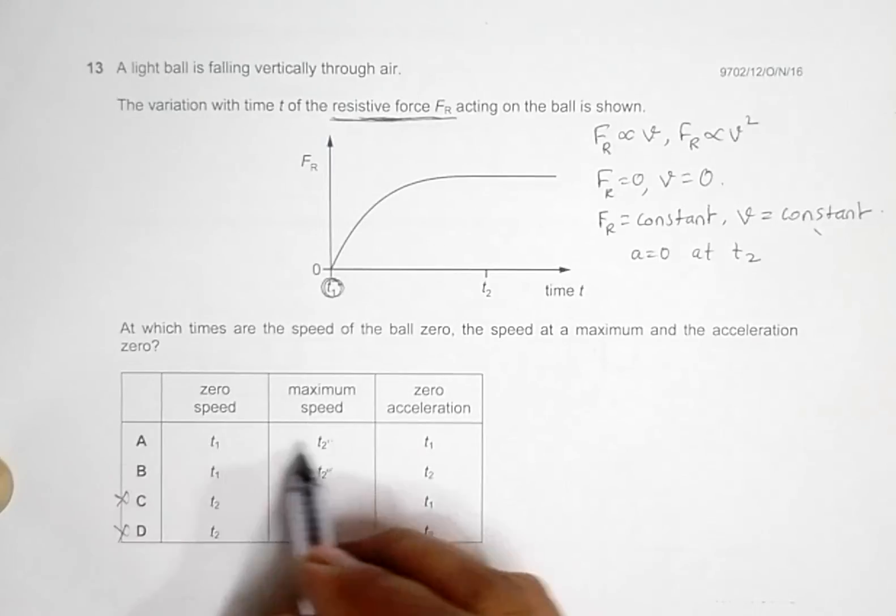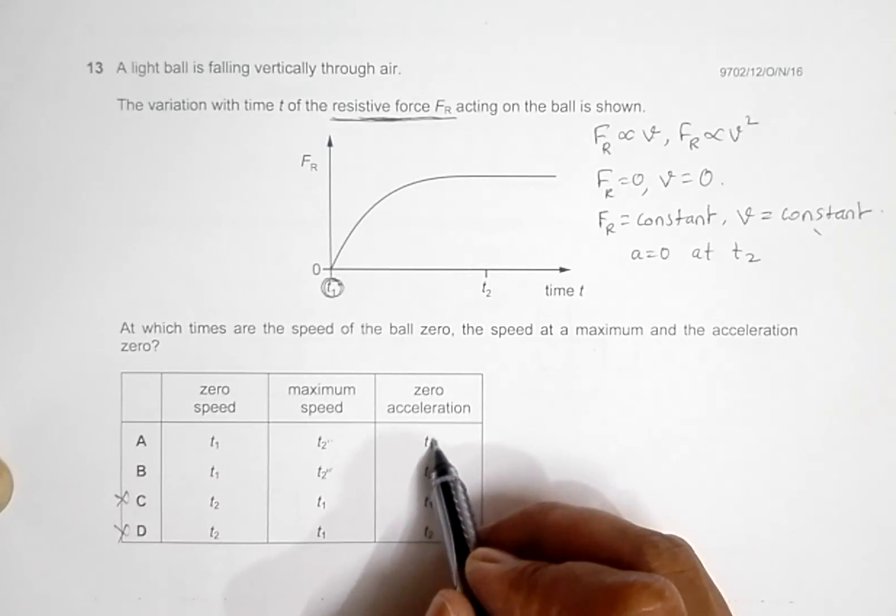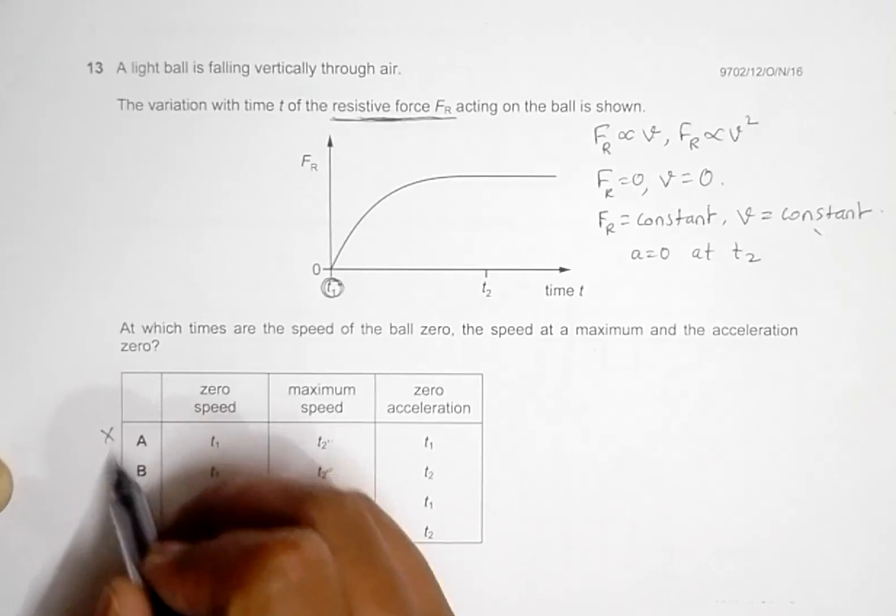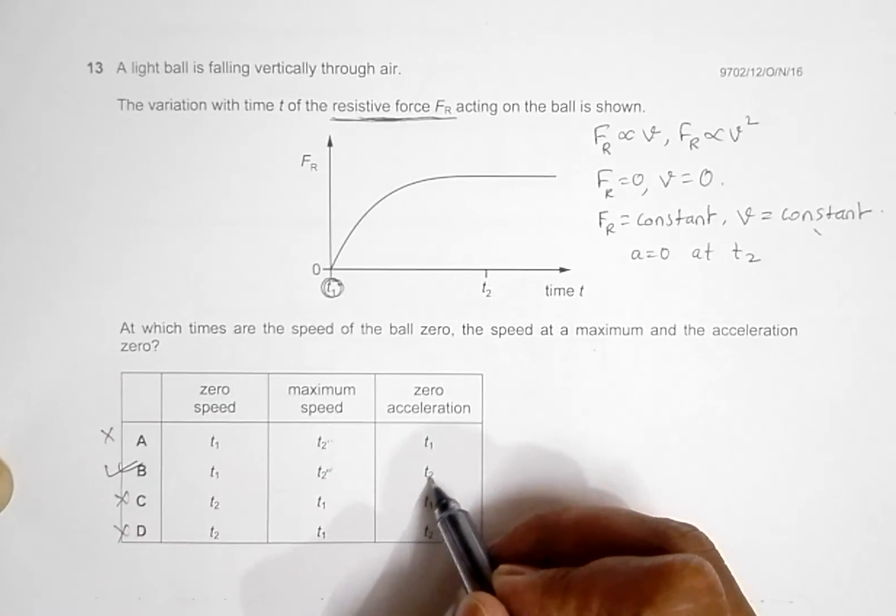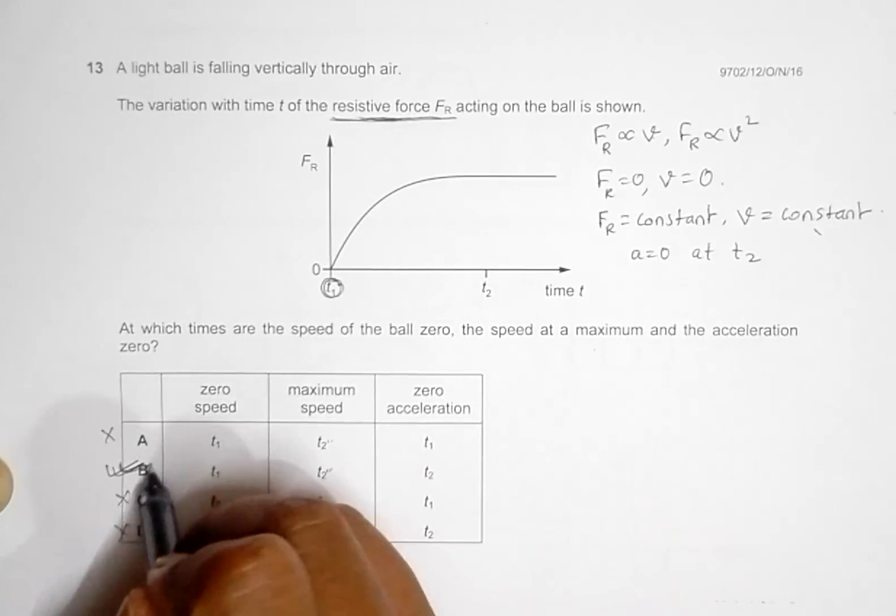So if you go to choices, in this choice it is said that a is zero at t1, so this is the wrong choice, and the choice should be choice number B because it says that a equals zero at t2. So choice number B is the correct choice.